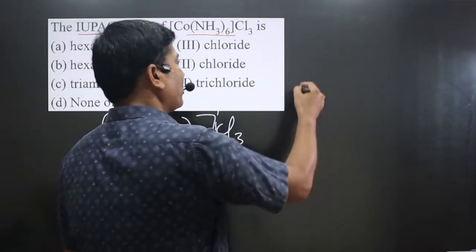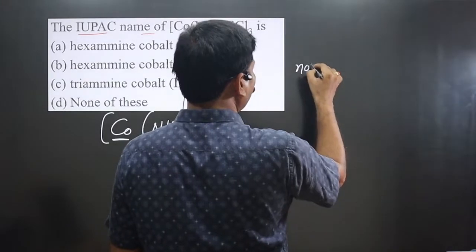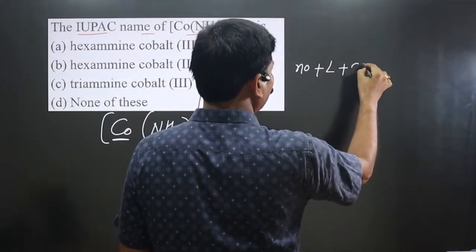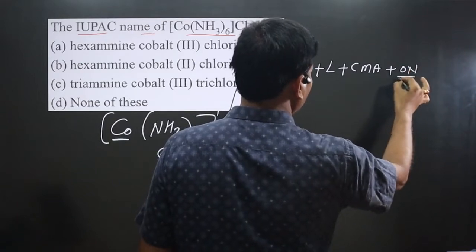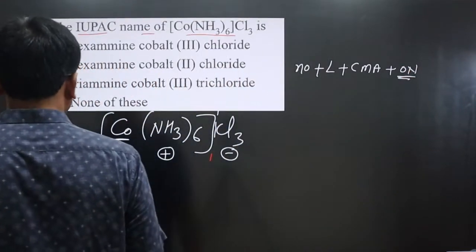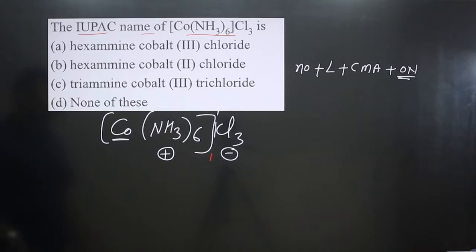Order for the naming of the complex: we have number of ligand, then we have type of the ligand, then we have central metal atom, then we have oxidation number of the central metal atom to be written in the Roman number. Follow that order.